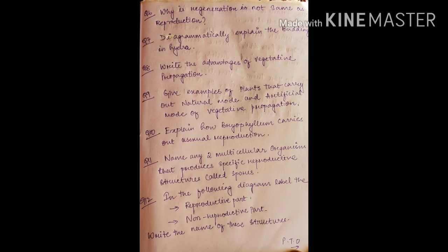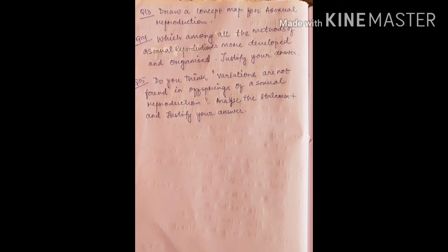The second page has seven questions, from question number 6 to question number 12. All of them are again important. All the diagrams need to be practiced because all the diagrams come in the exam. The third page, which is in front of you now, has three questions. So in total, there are 15 conceptual questions based on the NCERT Science book of Class 10, chapter 'How Do Organisms Reproduce.'